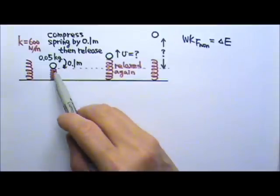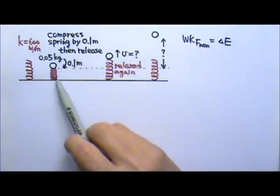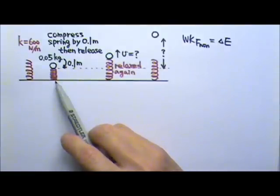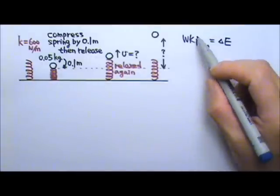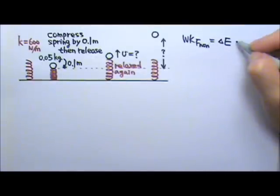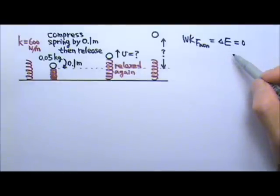In this case, after the ball is released, there are only spring's force and gravity acting on it, and both of those forces are conservative. So if we ignore air resistance and friction, there is no work done by non-conservative forces. Delta E is 0, E is constant.